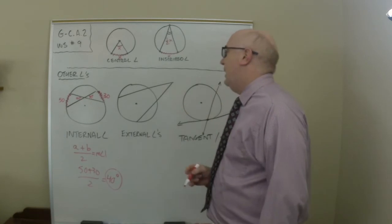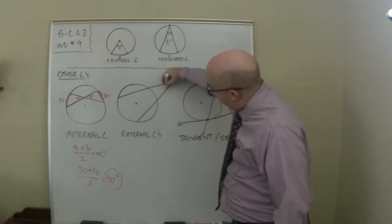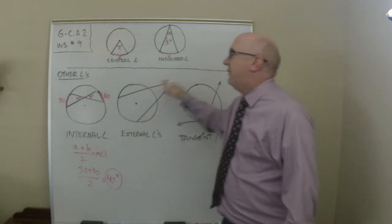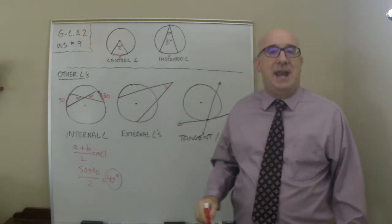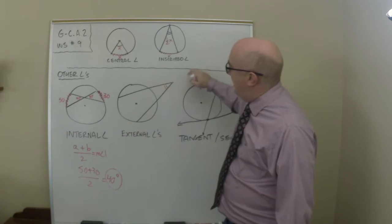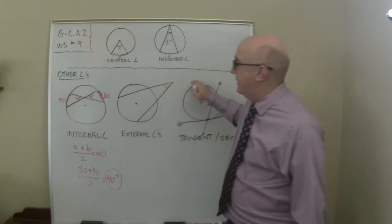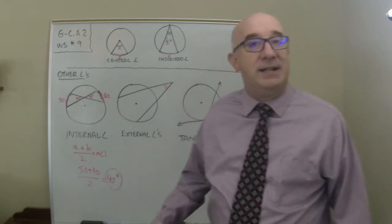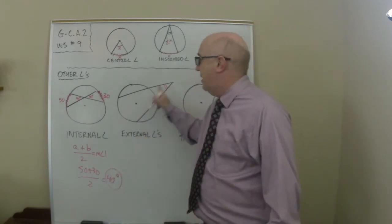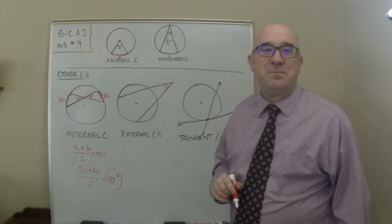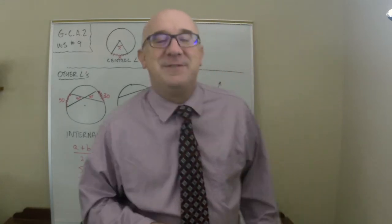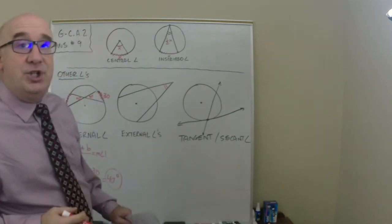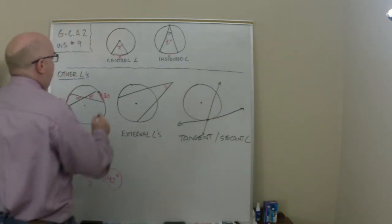In this one, the external angle is found out here in the exterior. This is made up of, if these were extended, secant. If these were lines on segments, and if this was a line not a segment, you'd have two secants, and they form not in the interior but in the exterior.